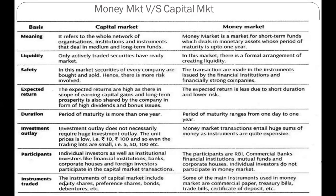Finally, the instruments differ between the two markets. Capital market instruments include shares and debentures, while the main instruments used in the money market are commercial paper, treasury bills, certificates of deposit, and government securities.